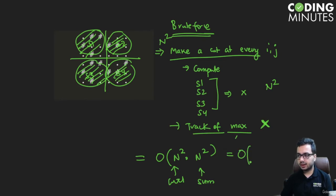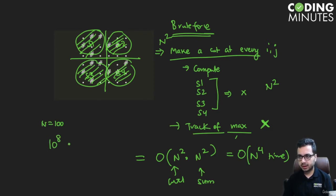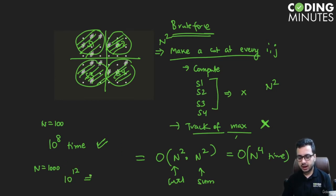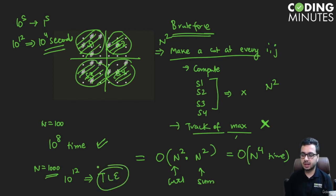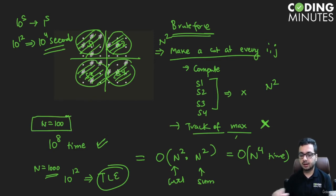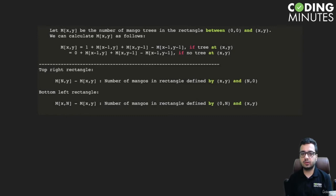This is the brute force algorithm with O(n⁴) complexity. If n is 100, it takes roughly 10^8 operations and will be accepted. But if n is 1000, then 10^4 raised to the power gives 10^12 operations — at 10^8 instructions per second, that's 10^4 seconds, causing a time limit exceeded error. So we need a better approach.